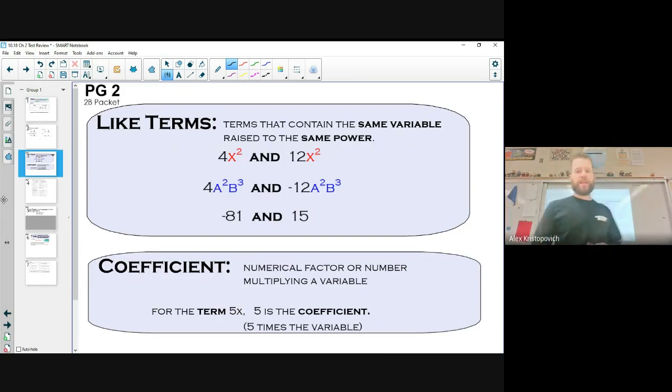All right. We can go ahead and turn to page 2. And so we talked about terms, right? And how you decide whether something is a term or not. Basically, if it doesn't have any plus signs or minus signs, that makes up a term. Well, we can also have like terms. And what a like term is, is when two terms have the same exact variable to the same exact power. So raised to the same exact exponent. So for instance, we have 4x squared and 12x squared, right? Notice how in red here, I have the x squared highlighted. So those are the same.